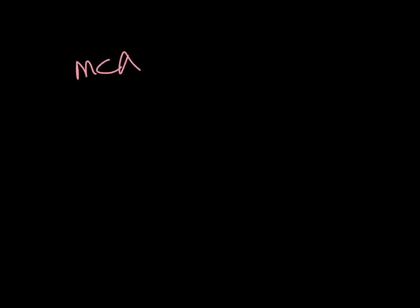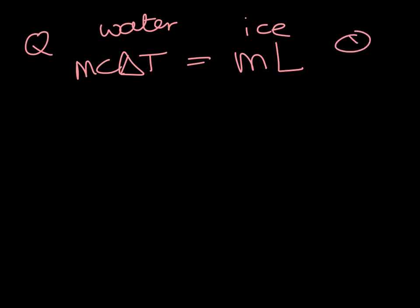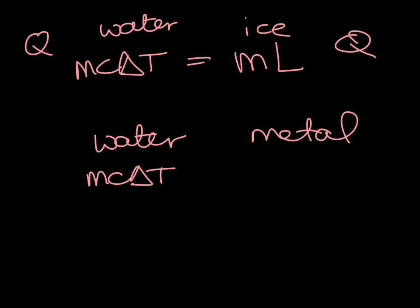The MC delta T for the water will equal the ML for the ice. Because they have the same Qs. The heats are the same. What you did in chemistry is that you had water and a metal, and both of these guys changed their temperature. So, you had MC delta T for the water equaled MC delta T for the metal.